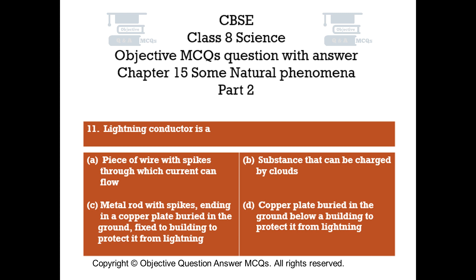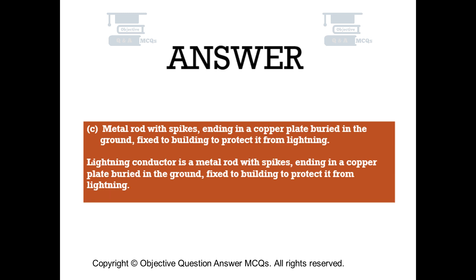Question number 11: Lightning conductor is a. Option A: Piece of wire with spikes through which current can flow. Option B: Substance that can be charged by clouds. Option C: Metal rod with spikes, ending in a copper plate buried in the ground, fixed to a building to protect it from lightning. Option D: Copper plate buried in the ground below a building to protect it from lightning. The right answer is Option C — lightning conductor is a metal rod with spikes, ending in a copper plate buried in the ground, fixed to a building to protect it from lightning.